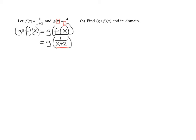So g of 1 over x plus 2 is 4 divided by 1 over x plus 2 minus 1. So I think you can see all I did was take this 1 over x plus 2 and plug it in here. So now all I have to do is simplify this complex fraction. And the easiest way of doing that is finding the LCD.